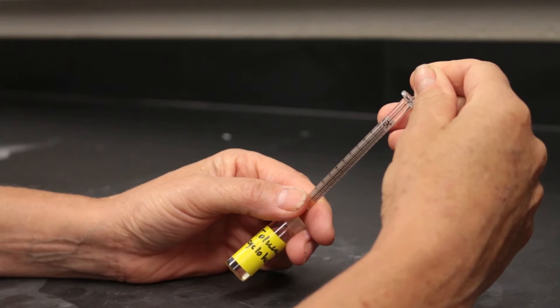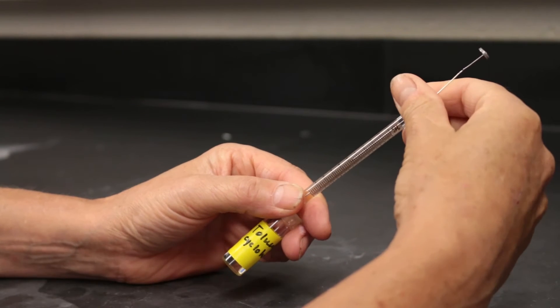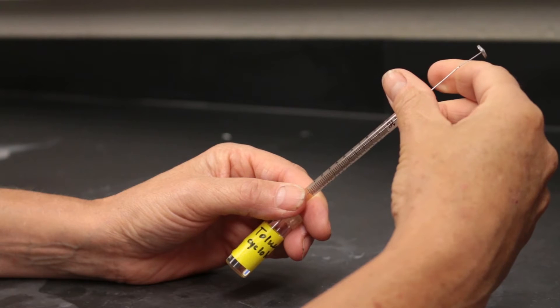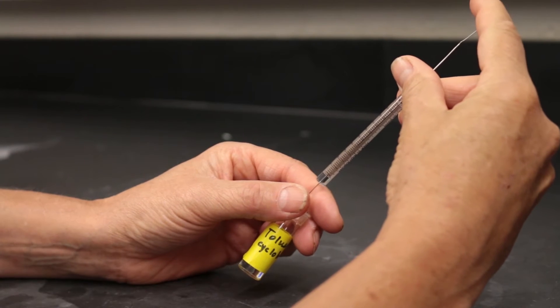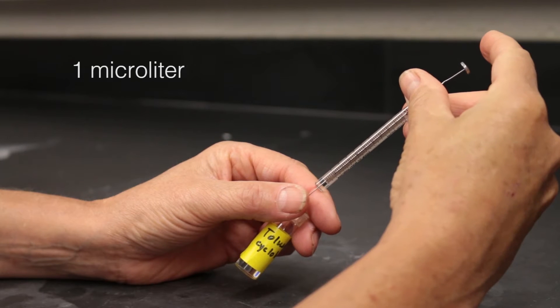Once again, submerge the needle in the solution and pull up the plunger so that the sample is about halfway up the barrel of the syringe. Carefully depress the plunger until it reaches the one microliter mark on the syringe.